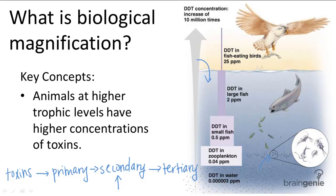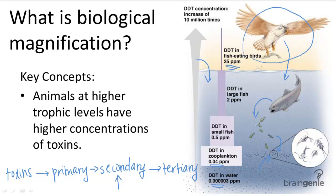Small fish that ate the zooplankton would end up eating the DDT in the zooplankton. Larger fish would then eat the smaller fish. And finally, fish-eating birds would eat those fish. These fish-eating birds would have a very high concentration of DDT that was much higher than the concentration that was originally in the water or the zooplankton. So you can see that the DDT running into the water had a really dangerous effect on these birds.